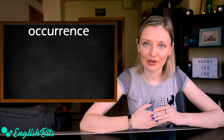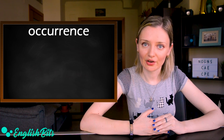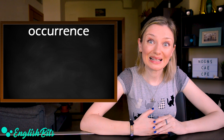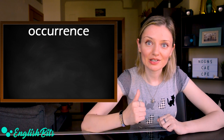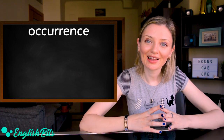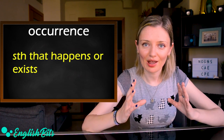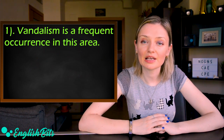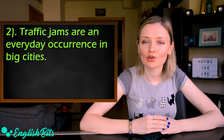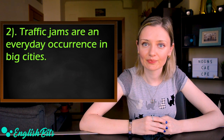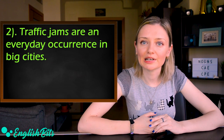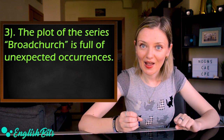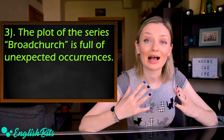Our third noun is 'occurrence.' Pay attention to its spelling as it's quite tricky — we've got double C and double R. The meaning is something that happens or exists. Examples: Vandalism is a frequent occurrence in this area. Traffic jams are an everyday occurrence in big cities. The plot of the series Broadchurch is full of unexpected occurrences.